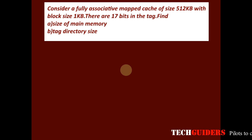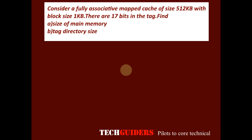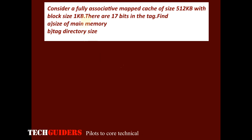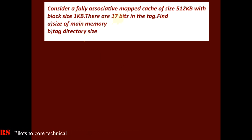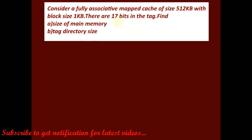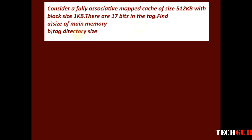Consider a fully associative mapped cache of size 512KB with block size 1KB. There are 17 bits in the tag. Find the size of the main memory and the tag directory size.